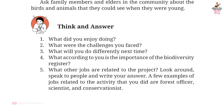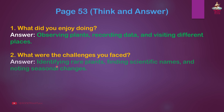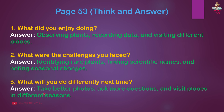Page 53, Think and answer. Question 1: What did you enjoy doing? Answer: Observing plants, recording data and visiting different places. Question 2: What were the challenges you faced? Answer: Identifying rare plants, finding scientific names and noting seasonal changes. Question 3: What will you do differently next time? Answer: Take better photos, ask more questions and visit places in different seasons.